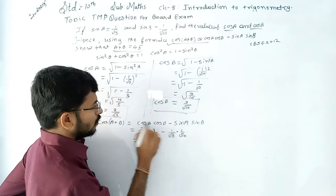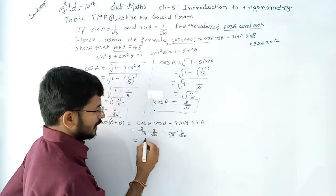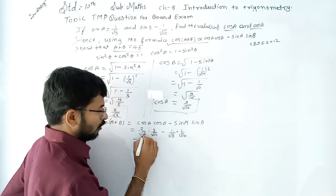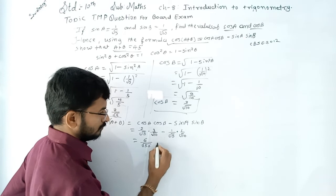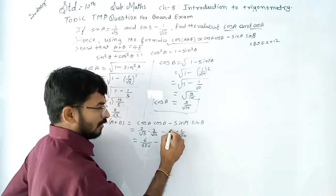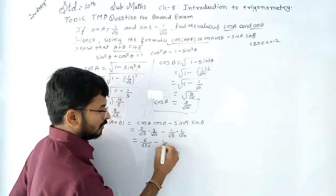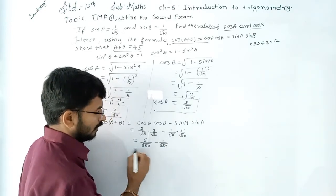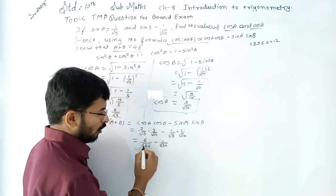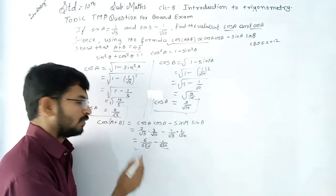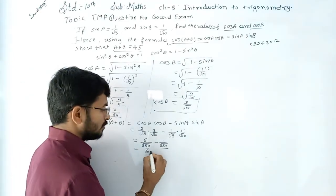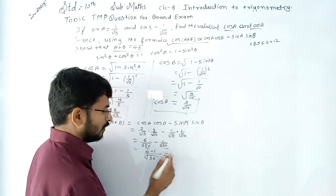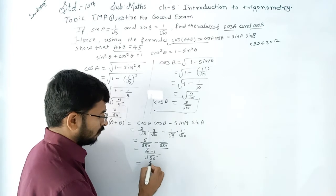Now, cos A × cos B = 2 × 3 = 6 upon √5 × √10 = √50. Minus sin A × sin B = 1 × 1 upon √5 × √10 = 1 upon √50. Since the denominators are equal, we subtract the numerators: 6 − 1 upon √50 = 5 upon √50.